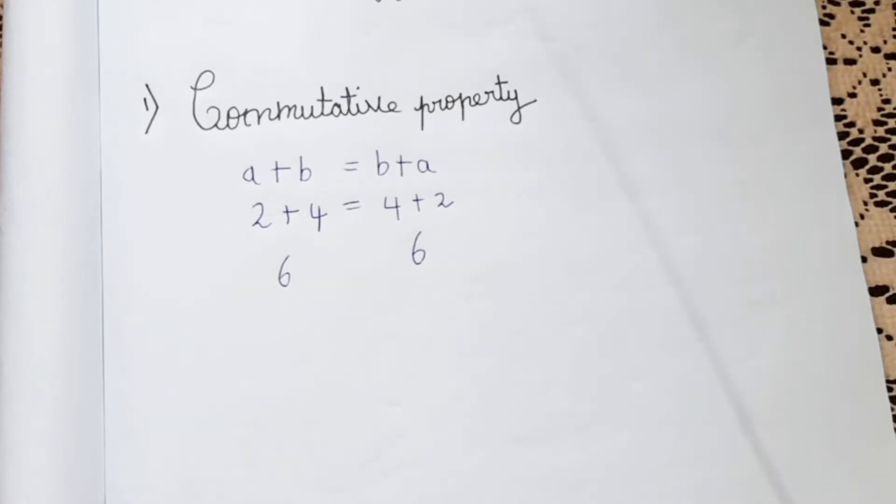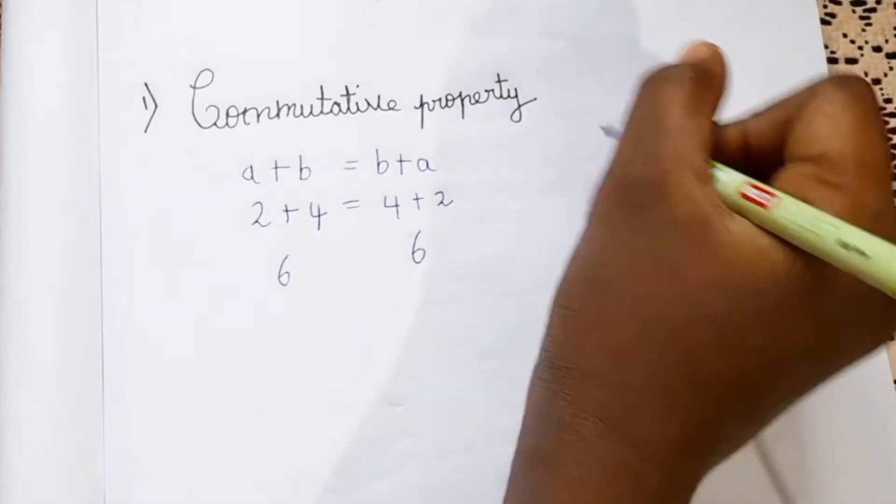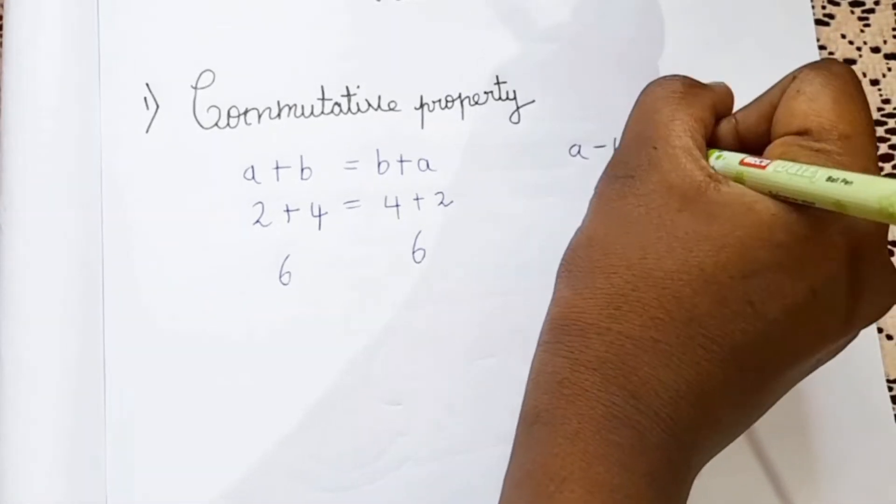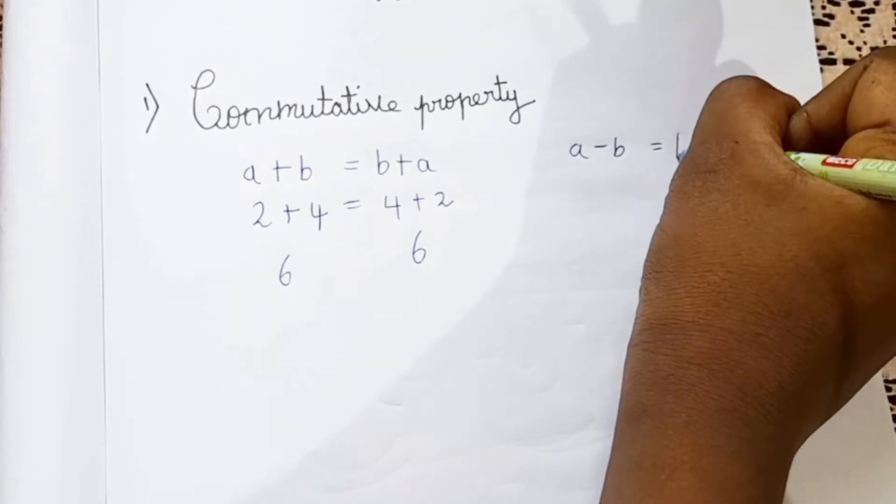But it's not only there in addition, it's also there in multiplication too. But in division and subtraction commutative property is not there. So let me show you why it's not there in subtraction. So a minus b is equal to b minus a.